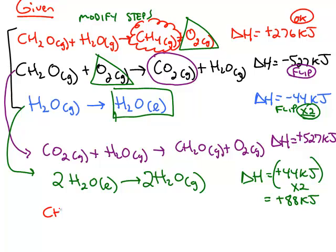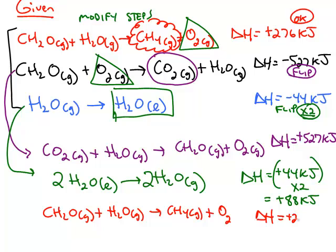If I just rewrite that step, I haven't changed the values. So delta H is still a positive 276 kilojoules.